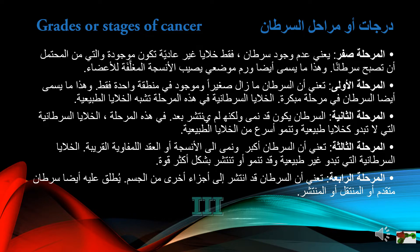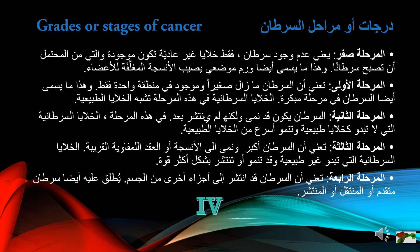Stage 3 means the cancer is larger and has grown into nearby tissues or lymph nodes. Cancer cells look abnormal and may grow or spread more aggressively. Stage 4 means the cancer has spread to other parts of the body, and is also called advanced or metastatic cancer.